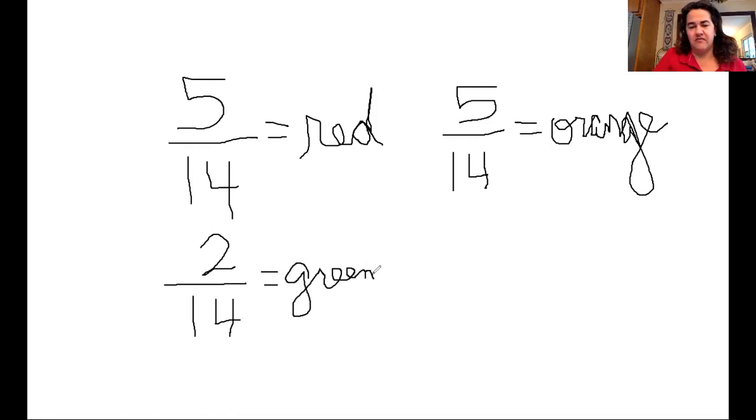And now, friends, I have one out of 14 are yellow. One out of 14 are purple. So I have two more fractions to write. One out of 14, let's see. One out of 14 are yellow. They won't let me write, friends. Technical difficulties. Thank you for hanging in there, second graders. One out of 14 is yellow. And one out of 14 is purple, right?